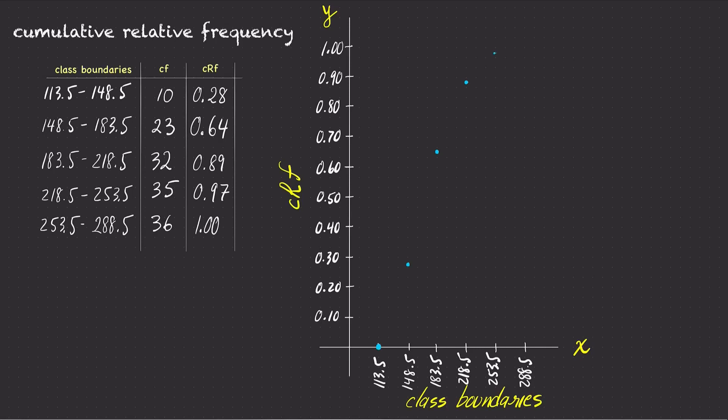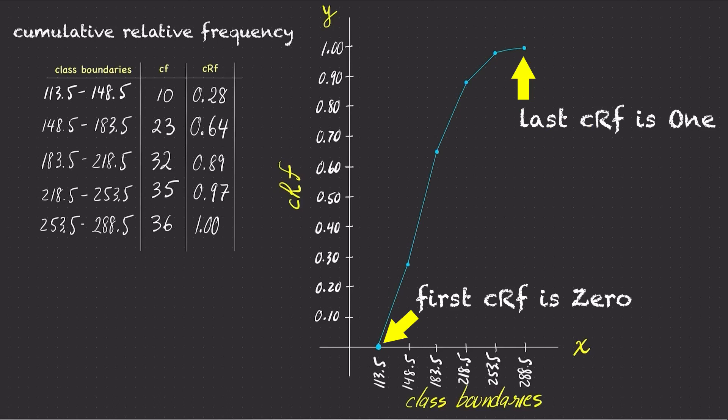Now, connect the dots. Notice the cumulative relative frequency polygon will always start at the Y value of 0 for the first class boundary, and it will always end with a Y value of 1 for the last class boundary.